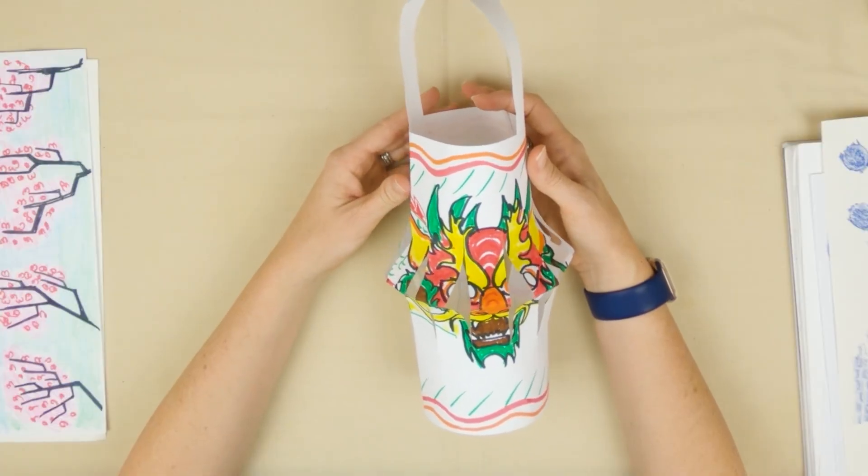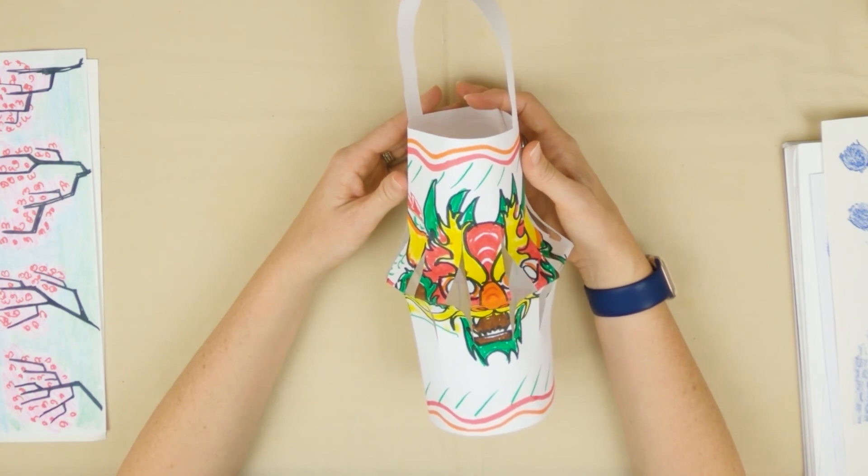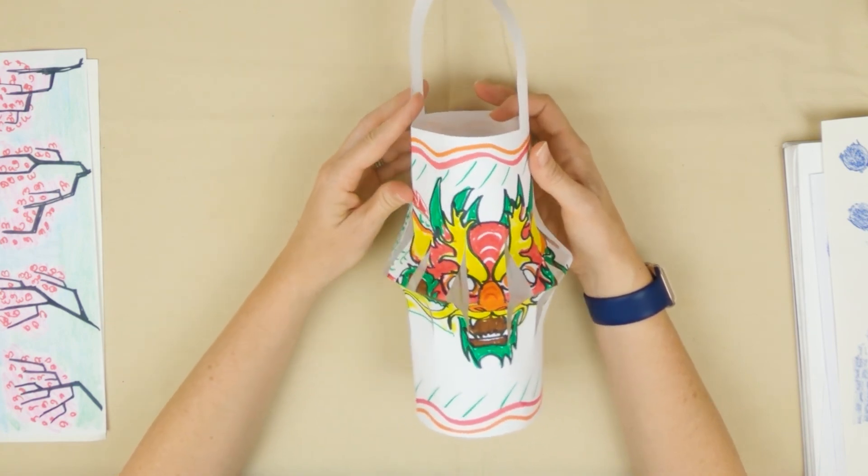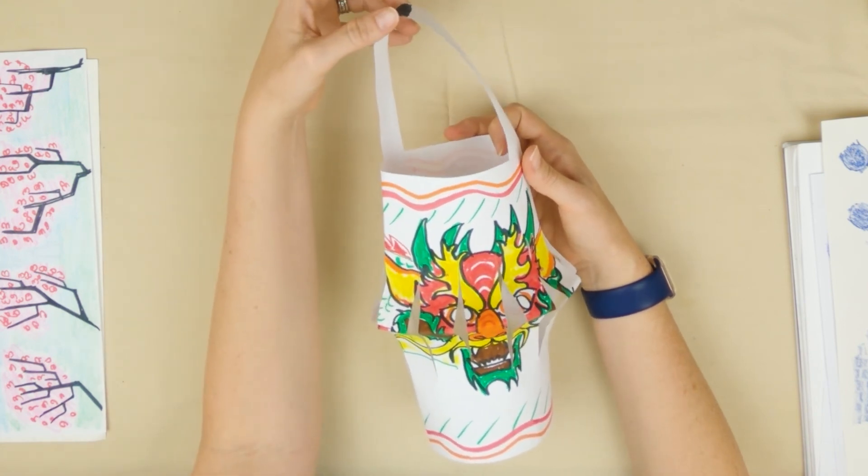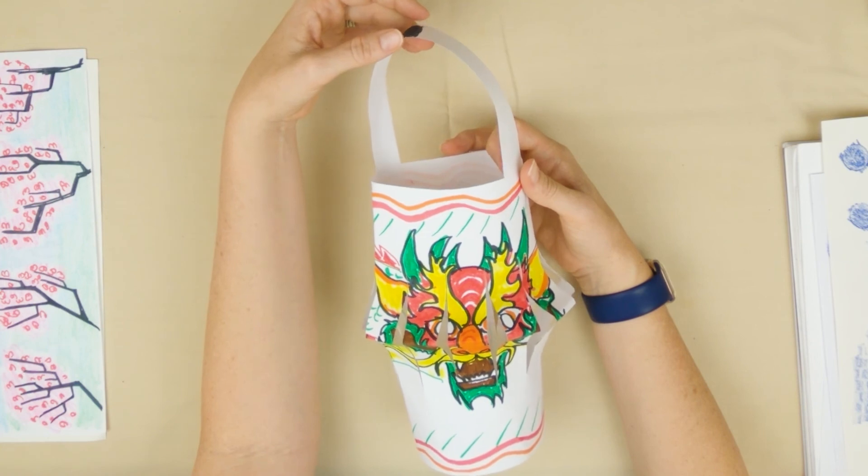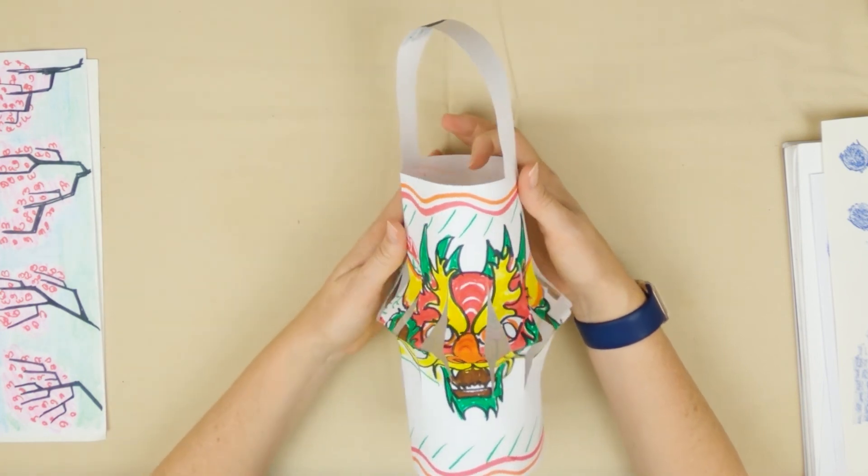Okay friends, so last week we made our design for our lantern and today we're going to be putting our lantern together. This is the shape we're kind of going for at the end. This handle is actually a separate sheet of paper, so you will need another sheet of paper for this handle. This main part of the lantern is just the sheet that you were working on last week.